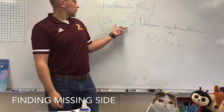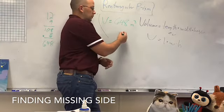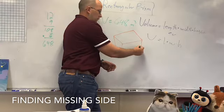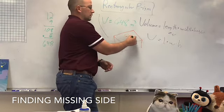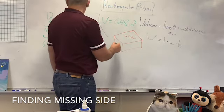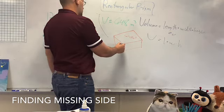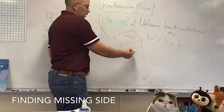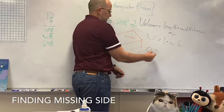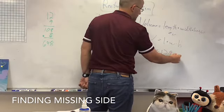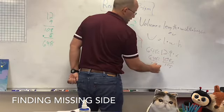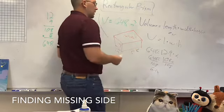Now this is our last one. Our volume is 648 meters cubed. I'm going to tell you my length is 12 and my width is 9. What is my height? I know my volume is 648, and I have 12 times 9 times x. That gives me 108x equals 648. Divide by 108 on both sides, and I get x equals 6. So my height is 6 meters.